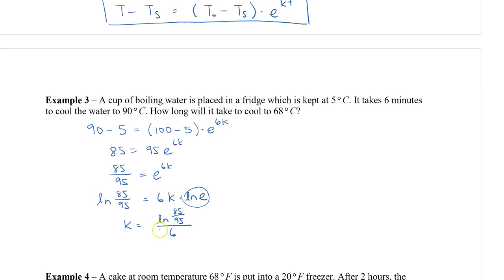So what I'm going to now do is, now that I know the proportionality constant, I want my final temperature to be 68 degrees, and then I want to figure out how long it takes to do this. So my final temperature is 68 minus my surrounding, which is 5. And then my initial minus my surrounding, which I already calculated from before, is 95, so I'll put that over here. Times e, and my proportionality constant is now ln, or natural log, 85 divided by 95 all divided by 6 times t.